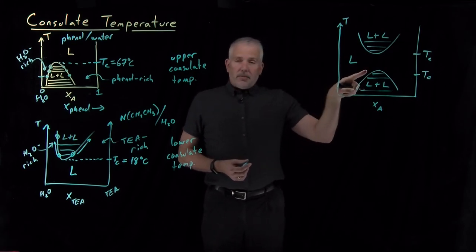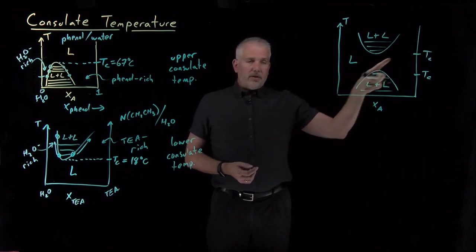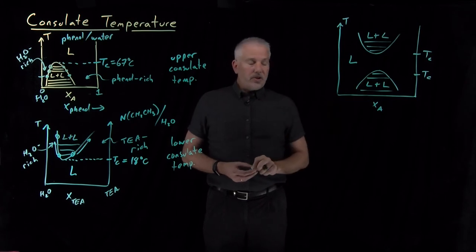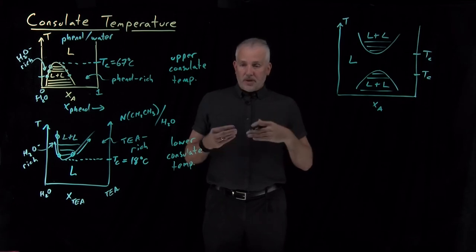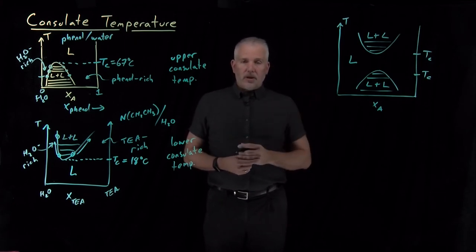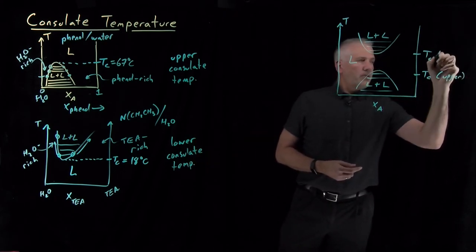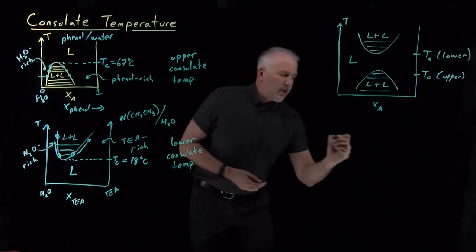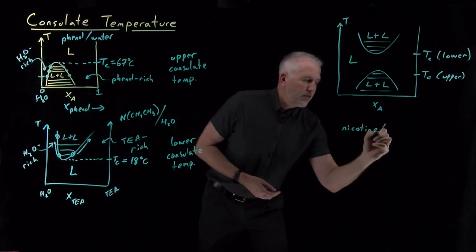This diagram is for the case where the lower consulate temperature is a higher value than the upper consulate temperature — and that's certainly one possibility. But there are pairs of solvents for which the opposite is true: the upper consulate temperature is above the lower consulate temperature. So here, the upper consulate temperature sits above the lower consulate temperature, and I'll give you a specific example with specific values for this case.